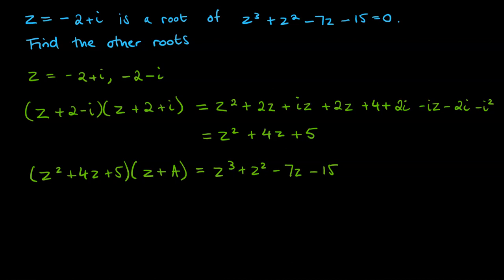And then the final term here, minus 15, has to be 5 times that a there. So that a has got to be a negative 3 to make that work. And you could complete the expansion and check that it works if you wanted to.